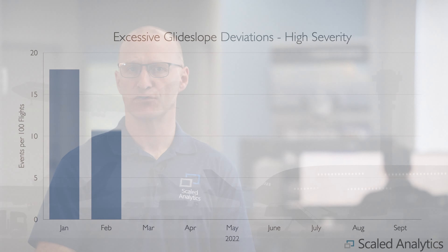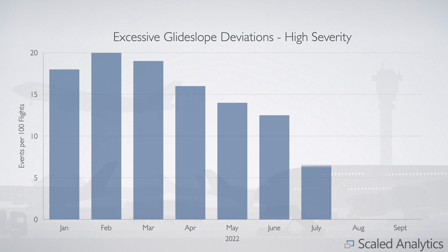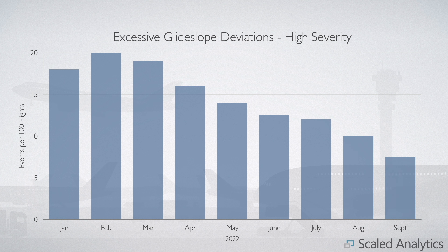If you've been running your FDM program and collecting data for some time, hopefully you've already taken care of that low-hanging fruit. By now you should also have enough data to look at some trends, which can be very helpful. Take a look at those events that could cause a serious incident or worse, and see how they're trending over time — such as month to month. Hopefully you'll see that your earlier efforts are paying off and your event rates are trending downward.